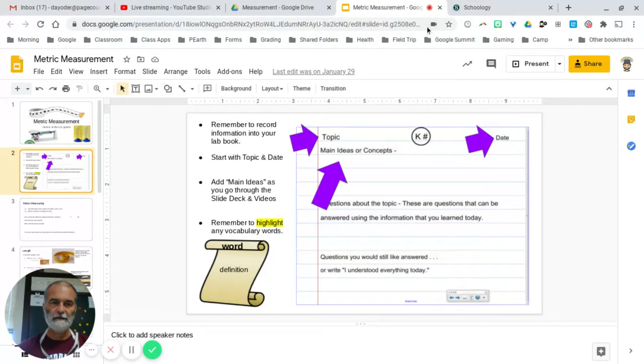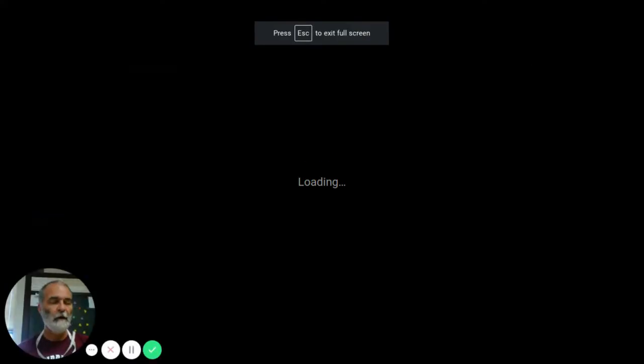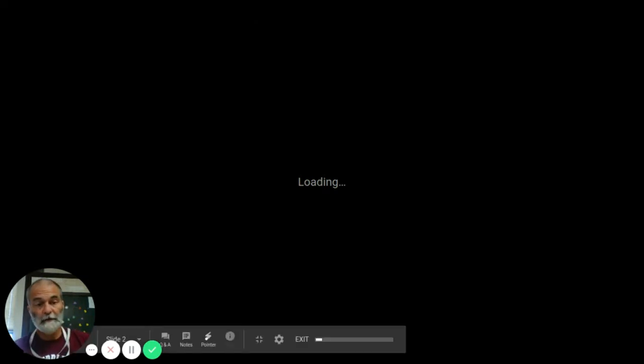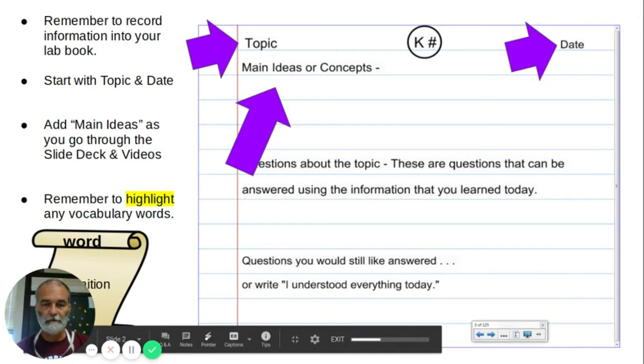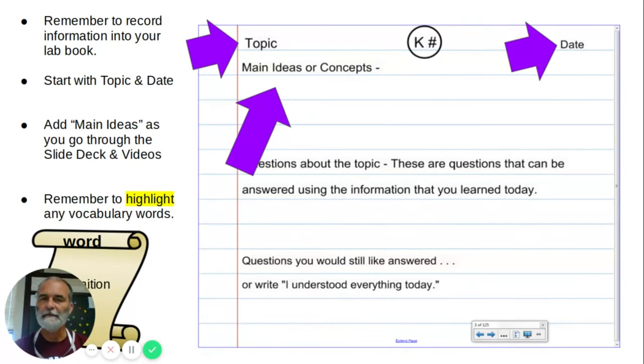Metric measurement, just like in the other things that you've been doing, you're going to put some information into your lab book. What do you put into your lab book? Well, you put in the information that it takes for you to learn about this topic. Put the topic and the date at the top of the page. Write down the different concepts as you learn them.